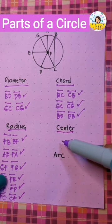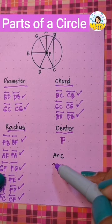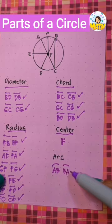Now the center is the letter F. We name a circle by its center, so we can say this is circle F. The arc is a part of a circle.